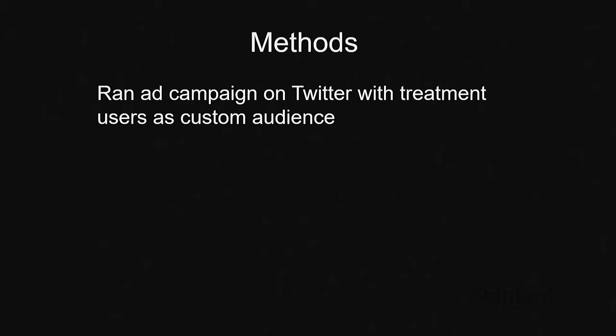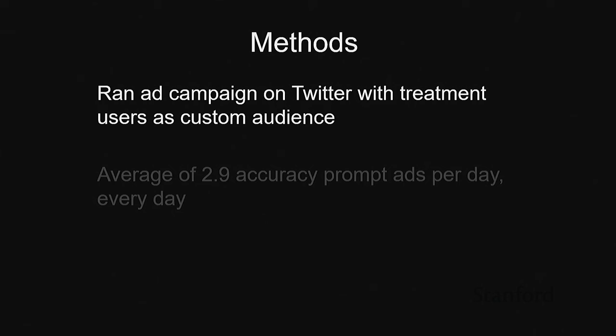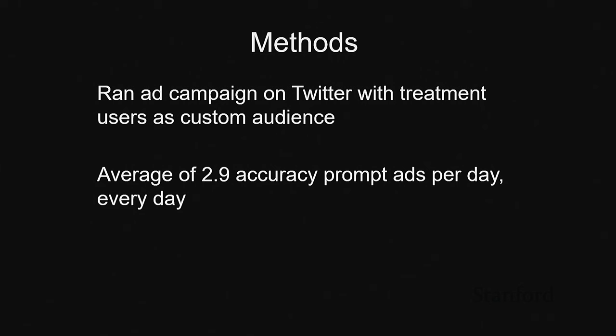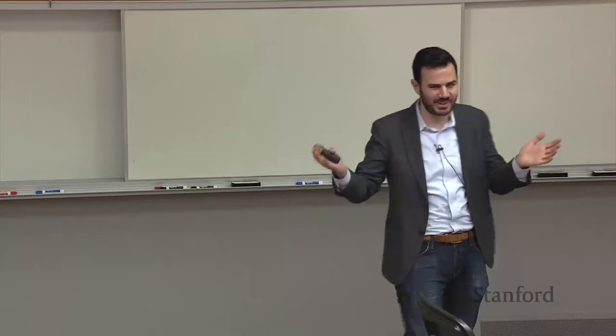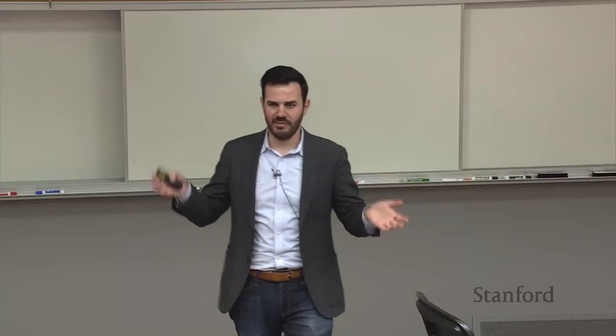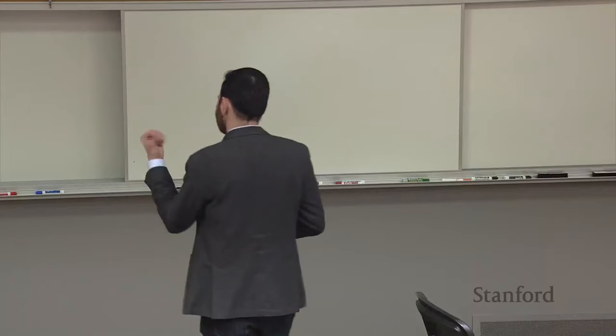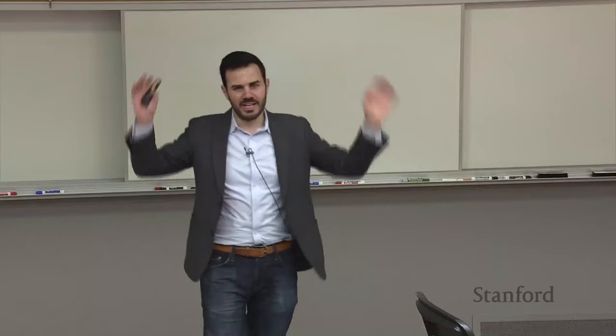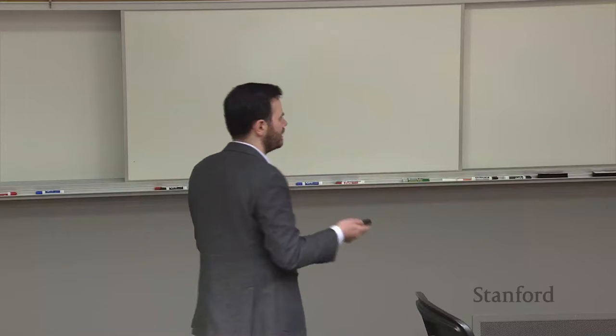We randomly assigned half the users to control and half to treatment using block randomization on several covariates to ensure balance and more precise estimates. People assigned to treatment were used as a custom audience in a Twitter ad campaign. Unlike the Facebook experiment where prompting was very infrequent, here we basically said show them as many ads as possible — we had a hard time getting Twitter to accept more money, but it came out to an average of 2.9 accuracy prompts per day, every day for the duration of the campaign. To avoid habituation, we had a set of 50 different creatives and randomly sampled from that set so people wouldn't start ignoring them.